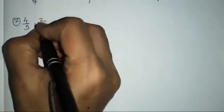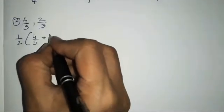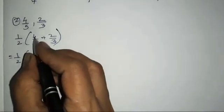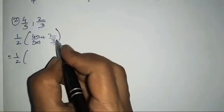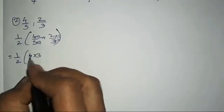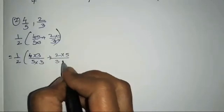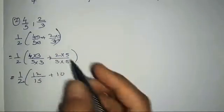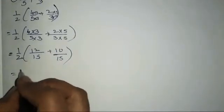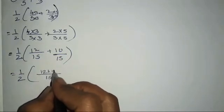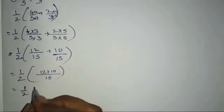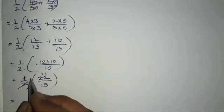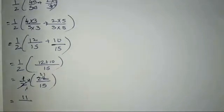Next sum: the two given numbers are 4/5 and 2/3. So half of (4/5 + 2/3). We have to equalize the denominators first, making them 15. We multiply 4/5 by 3 and 2/3 by 5. So half of (12/15 + 10/15) = half of 22/15. Now, 2 ones are 2, 2 elevens are — 1 into 11 is 11 and 1 into 15 is 15. So we get 11/15.